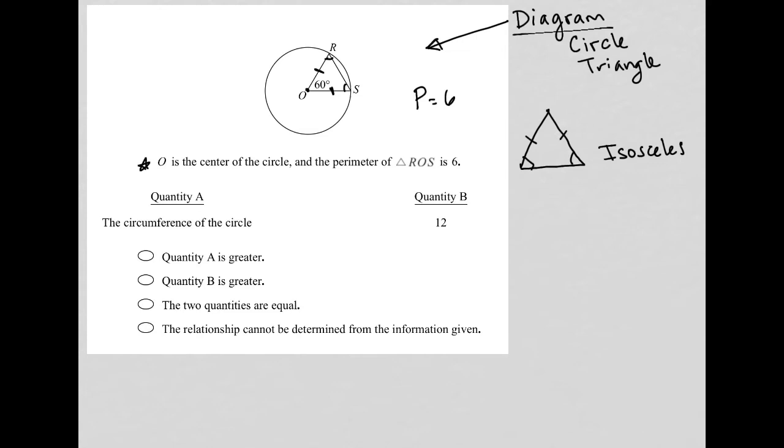All three angles in a triangle must add up to 180. We already have 60 here as a central angle, which tells us that these angles here must also be 60. So we have 60 degrees, 60 degrees, and 60 degrees, which technically means that we have not just an isosceles triangle, but in fact, this is an equilateral triangle.